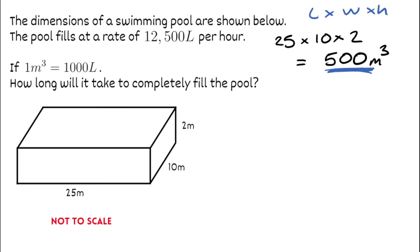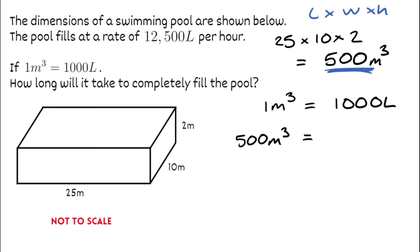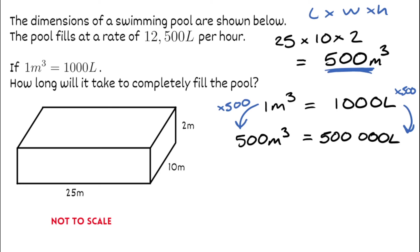Now we know the volume of the pool is 500 metres cubed. The question tells us 1 metre cubed is equivalent to 1,000 litres, and we want to find the litres equivalent to 500 metres cubed. To keep things equivalent, we multiply both sides by 500: so 1,000 multiplied by 500 gives us 500,000 litres. It would take 500,000 litres to completely fill the pool.